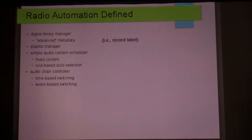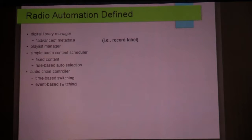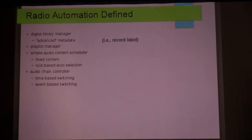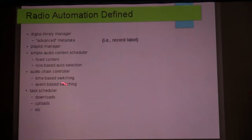An automation system is an audio chain controller. If you have a hardware-based switcher that switches from a satellite feed or a different studio or wherever, your automation system should be able to control that switching system. Rivendell has the ability to be a switching system itself. The switching should either be based on time of day or based on some event taking place.